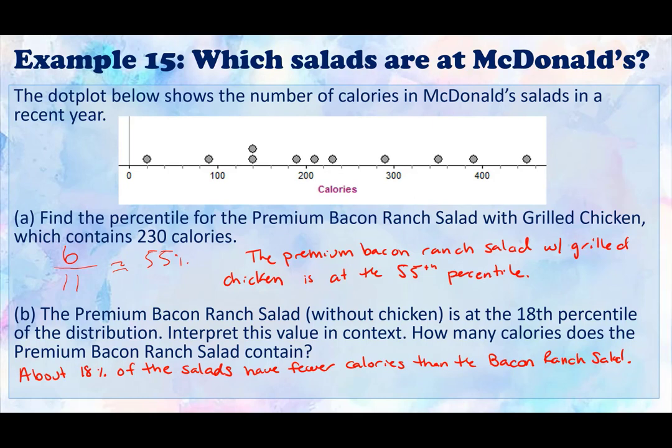Now, because 18 percent of 11 would be about, remember 18 percent can be written as 0.18, and there are 11 salads here. So 18 percent of 11, or 0.18 times 11, is approximately 1.98. So that means, because of a rounding error, we're going to round this to 2. So that means that because there will be 2 less than our bacon ranch salad, one of these 2 here have to be our bacon ranch salad without chicken.